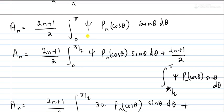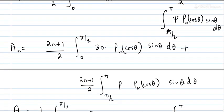We separate the integral into two parts: from 0 to π/2 and from π/2 to π, because the boundary conditions differ over these two ranges. From 0 to π/2, ψ = 30, and from π/2 to π, ψ = p. After putting in these values, we can find the coefficients A₀, A₁, A₂, and so on.